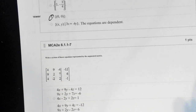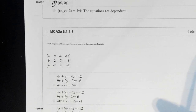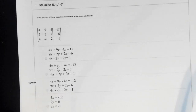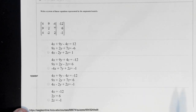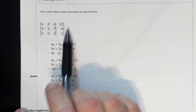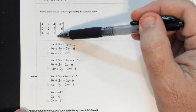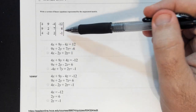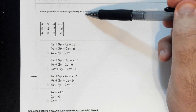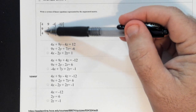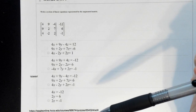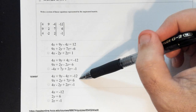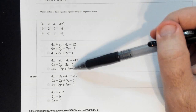You can use either method on the test as long as I see some work. This next one is the matrix — you all did this in Algebra 2. Being able to take an augmented matrix: it has this line here. If it's a 3 by 3, it has to have three equations and three variables, and you just match them up.